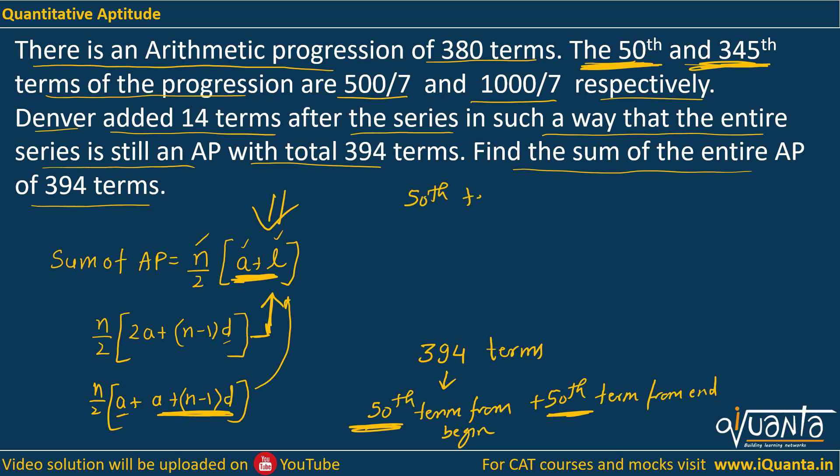Now I know the 50th term from beginning, it has been given to us as 500 by 7. We have been given this 345th term as well. So if I try to find out 50th term from the end, then what will it be?